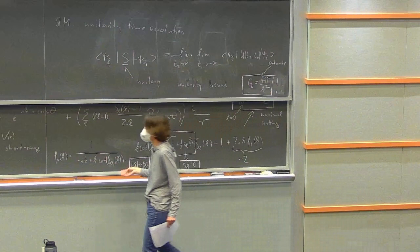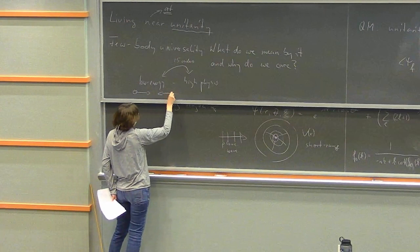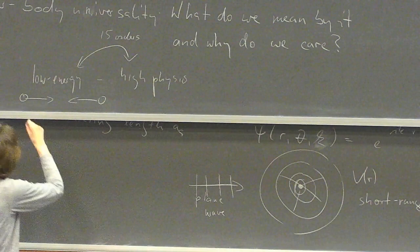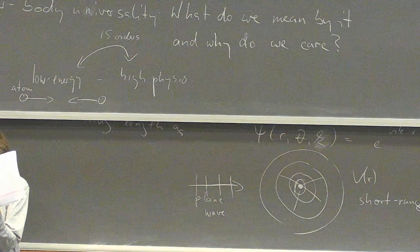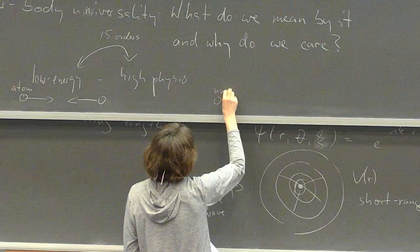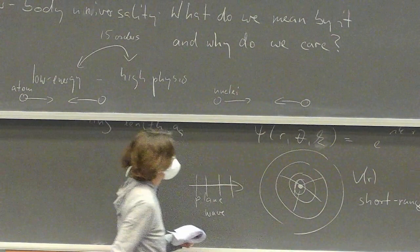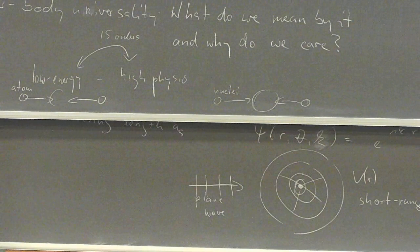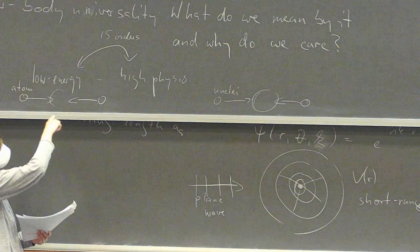This independence from microscopic details gives us an avenue to say: whether we have two atoms colliding in the low energy regime, or nuclei colliding — when we are directly at unitarity, the microscopic details of the interaction completely disappear from the framework. This means we have a way to connect physics occurring on very different energy scales and very different length scales.